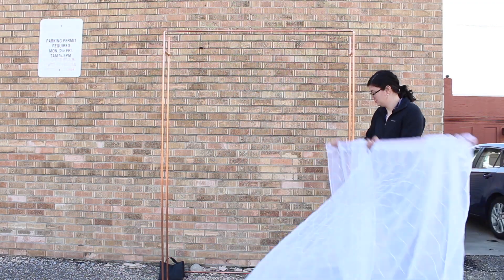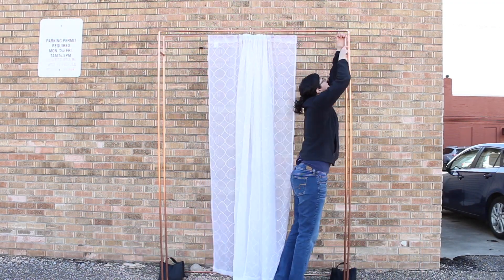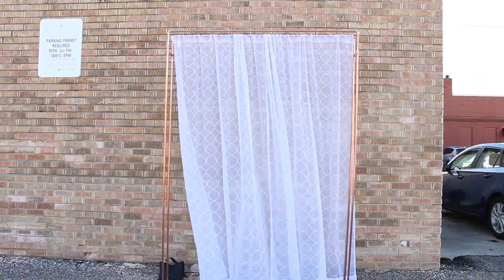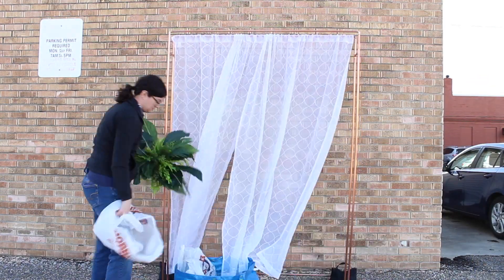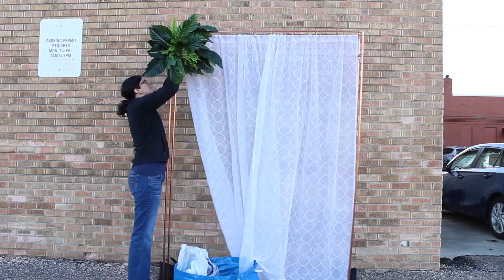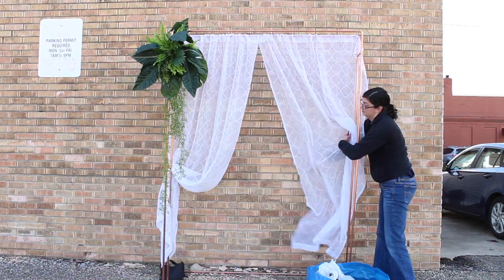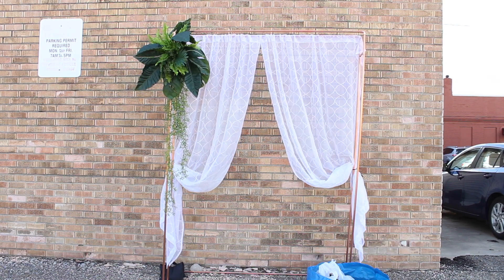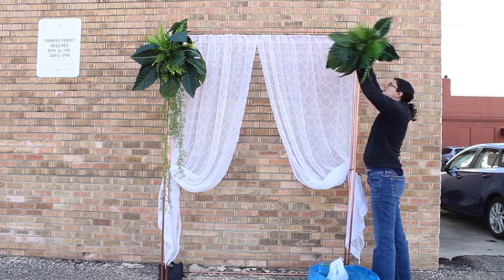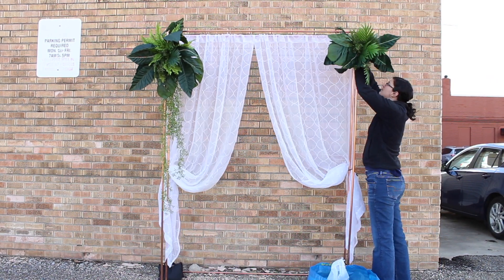I've got the sandbags on the bottom, and then I'm just attaching my sheer white panels to the back upper pipe. I'm going for a tropical wedding altar vibe here, and this is honestly what I love about it being a double pipe arch instead of just a single pipe, because I can have the fabric on the backside and still attach florals on the front without interfering with each other.